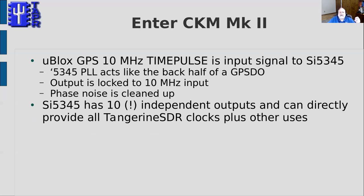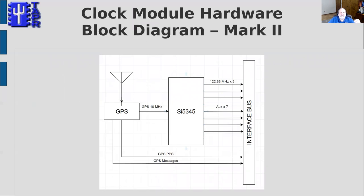Based on those ideas, we started from scratch with the Mark II clock module. We're going to use a U-blox GPS time pulse at 10 MHz fed as the input signal to a Silicon Labs 5345 jitter attenuator chip. The PLL on that chip is actually acting like a GPSDO. The output is synthesized to the frequency we want, locked to the 10 MHz input, but with significantly cleaned-up phase noise. The 5345 chip has 10 independent outputs and can directly provide all the Tangerine SDR clocks plus extras. This is a block diagram of the Mark II system — it's way simpler, just a GPS feeding the 5345 chip, with outputs going to an interface connector along with the pulse per second and serial data stream from the GPS.